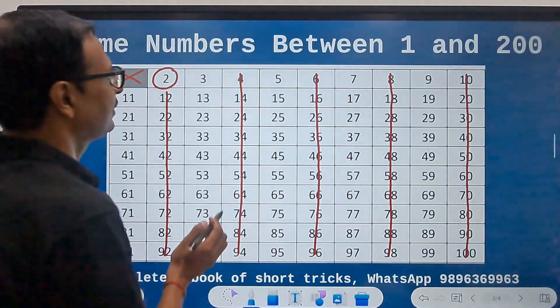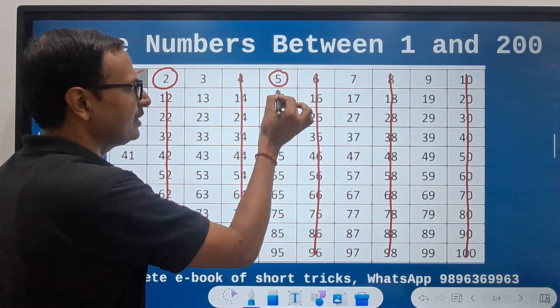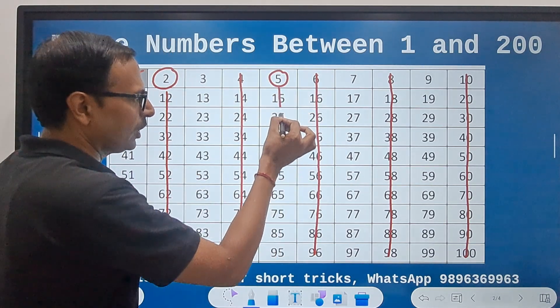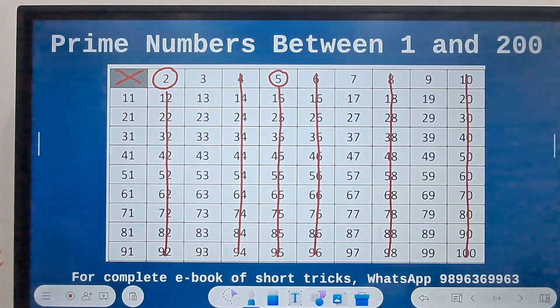Next up we have the number 5. 5 is a prime number, and in the table of 5 you find all these numbers, so this column is also ruled out.